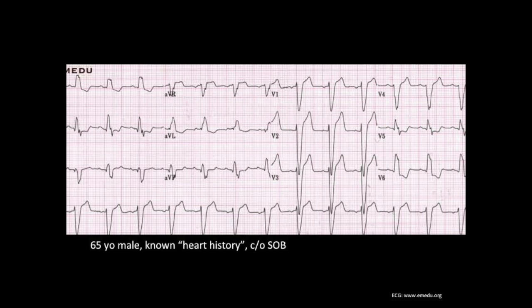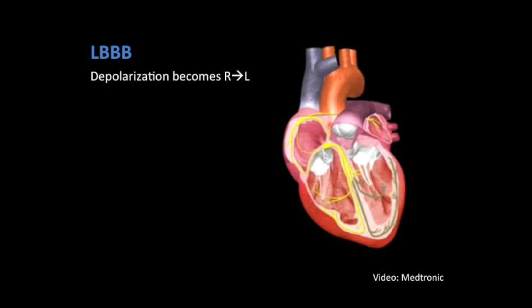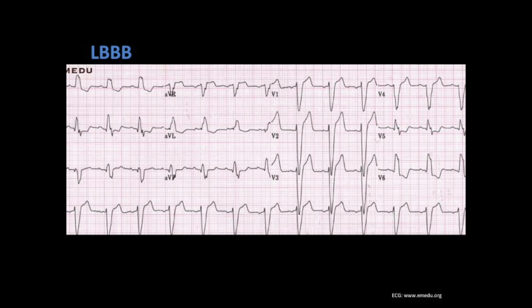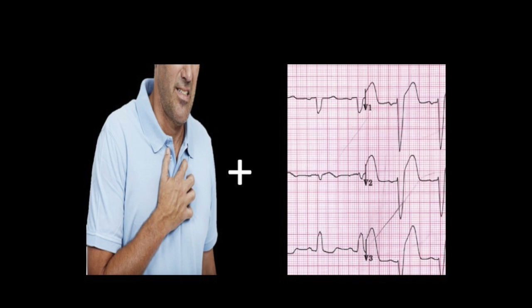This first case is a 65-year-old male with known heart history complaining of shortness of breath. This ECG shows some classic findings of a left bundle branch block. In a left bundle branch block we get a blockage of the left side of the conduction of the heart. Because of that, the normal depolarization that goes from left to right switches to right to left. Because of this, we get ECG findings including a widened QRS, broad notched R wave in leads I, V5, and V6, and a dominant S wave in V1. In addition, the ST segment and T wave are opposite the vector of the QRS. So now we have this really funky looking baseline ECG which could possibly mask signs of a STEMI — so what do we do when this person presents with active chest pain?